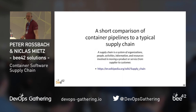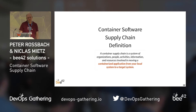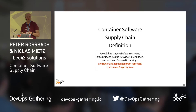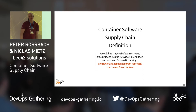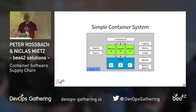We define container supply chain: a container supply chain is a system of organization, people, activities, information, and resources involved in moving a containerized application from your local system to a target system. It's really a move, a promotion — it's not only a reference. You ship products. That is what I think containers do for you.